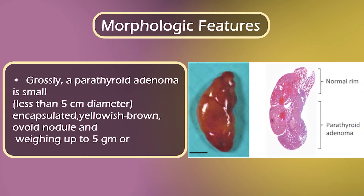Morphologic features. Grossly, a parathyroid adenoma is small, less than 5 centimeters in diameter, encapsulated, yellowish-brown, ovoid nodule, and weighing up to 5 grams or more.